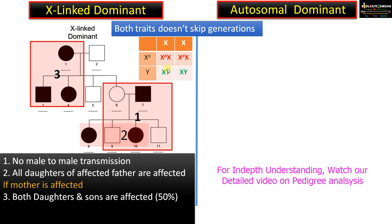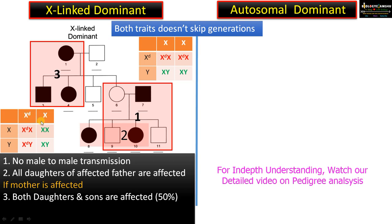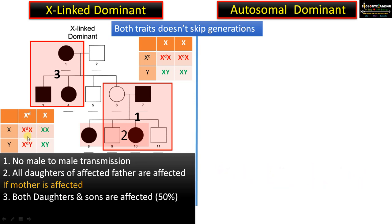Now the third point: if the mother is affected, as you can see, both daughters and sons are also affected. The chance is 50%. Here also, let us take the genotype. This is the genotype of the father — X and Y are the gametes. Mother is affected, therefore X^D X is the heterozygous condition. Then the offspring are X^D X and XX, X^D Y and XY. As you can see, 50% of the offspring are affected — both males (XY) and females (XX), both sons and daughters are affected.